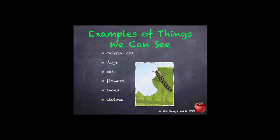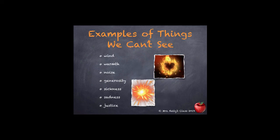Examples of things we can see: we have caterpillars — there's a picture of a caterpillar who must be very hungry because he's eating up that leaf, which is also another thing that we can see. We also have dogs, cats, flowers, shoes, and clothes.